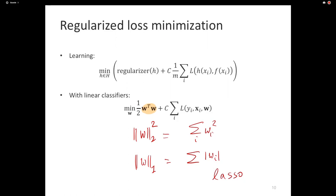A regularizer in general is just a strategy to impose a preference over certain types of models. If you have two classifiers that both have equal loss, you need some sort of a tiebreaker — and the function that does that in an abstract sense is a regularizer.